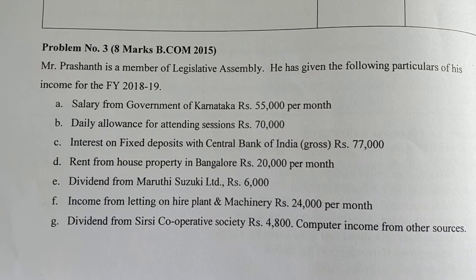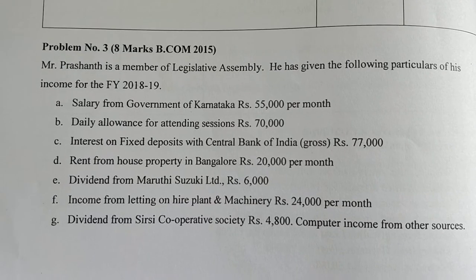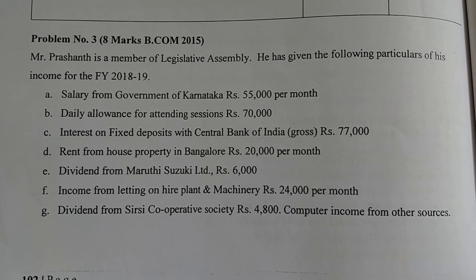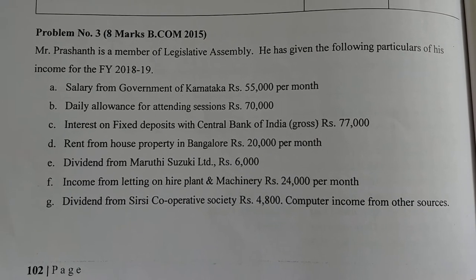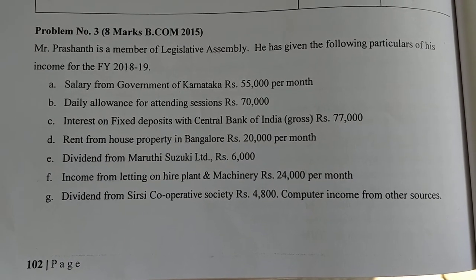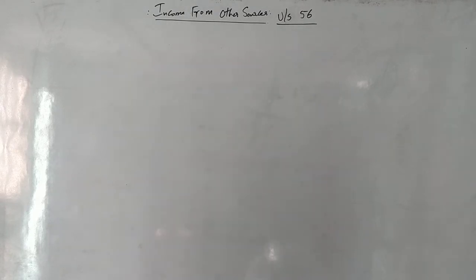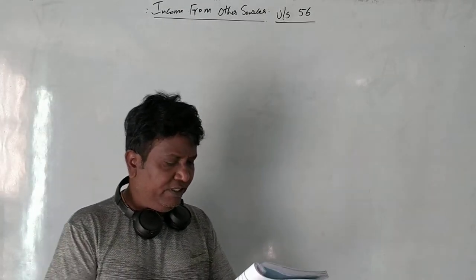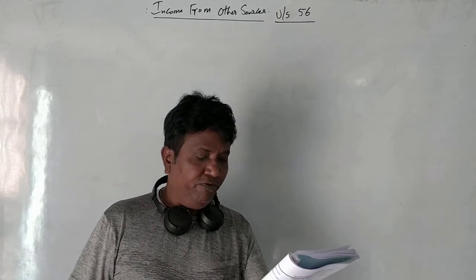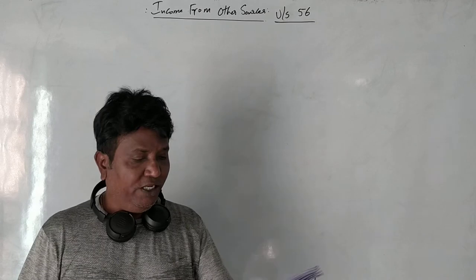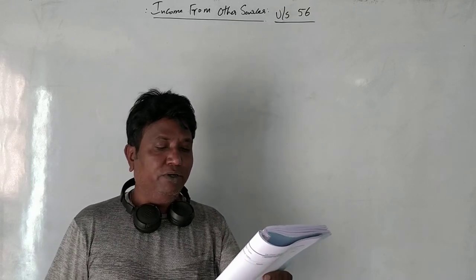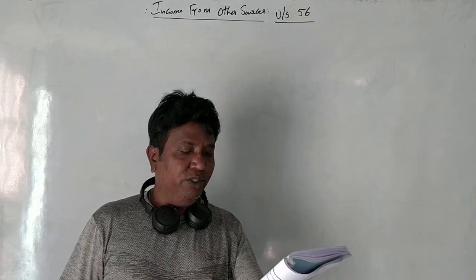This is a small example for income from other sources. This carries 6 marks and this question appeared in the year 2015 for BKON students. Let us discuss this problem and try to solve it. Mr. Prashant is a member of the legislative assembly — that means he is an MLA — and he has given the following particulars of his income for the financial year, previous year 2018-19.